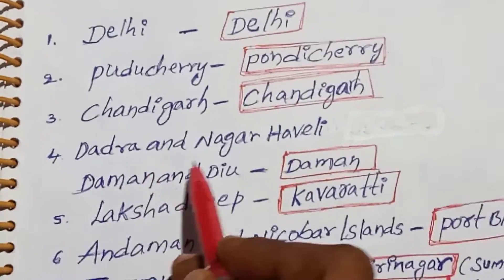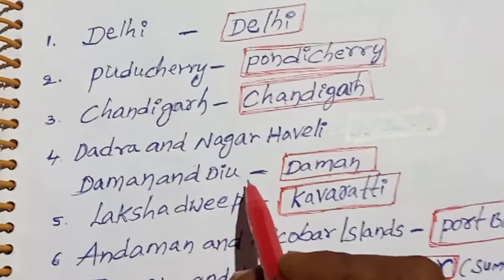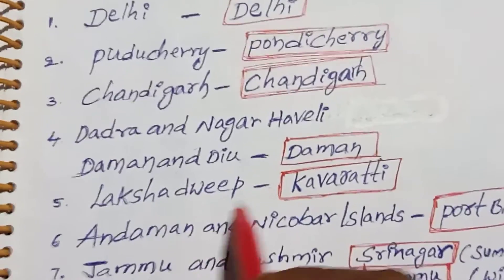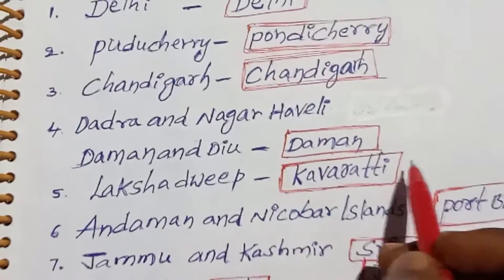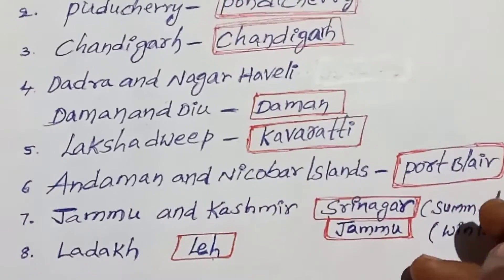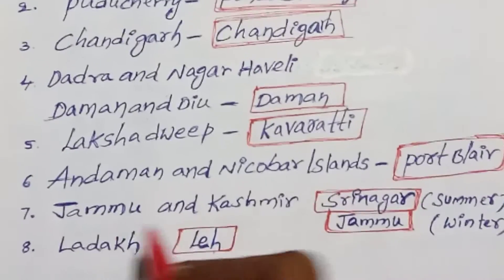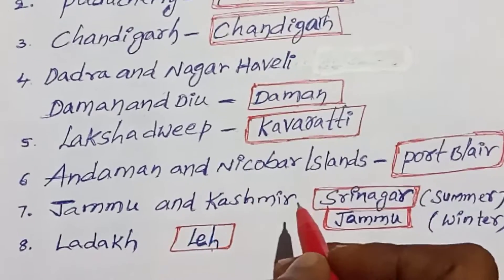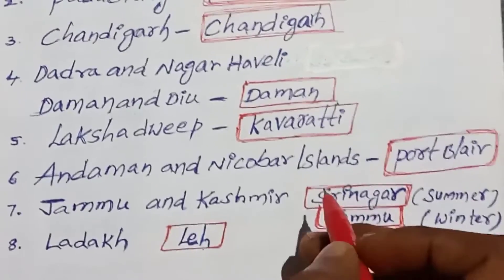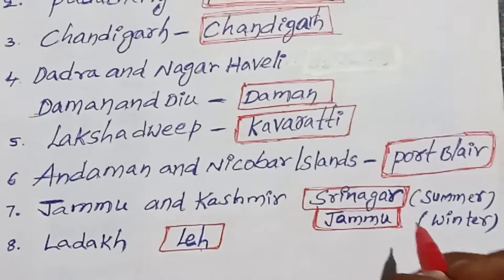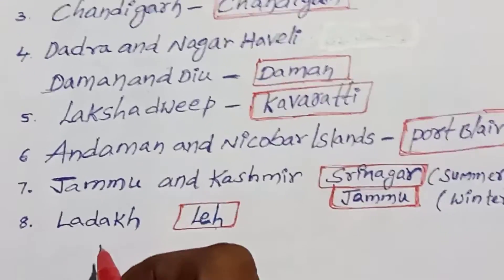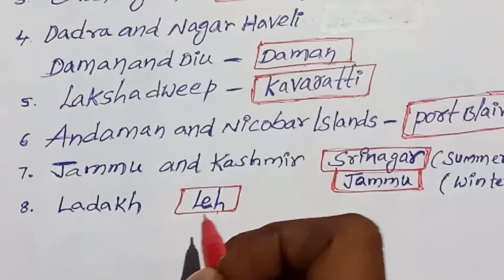Dadra and Nagar Haveli and Daman and Diu, capital Daman. Lakshadweep, capital Kavaratti. Andaman and Nicobar Islands, capital Port Blair. Jammu and Kashmir, capital in summer Srinagar, in winter Jammu. Ladakh, capital Leh.